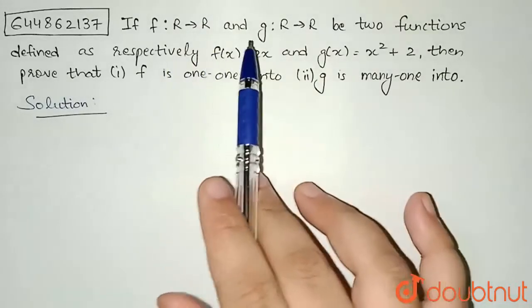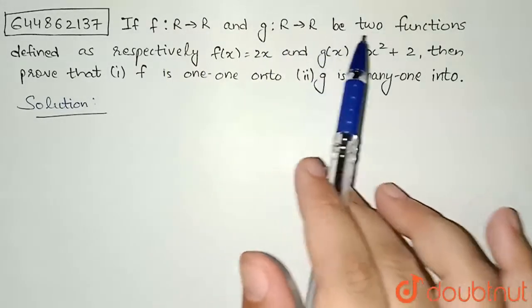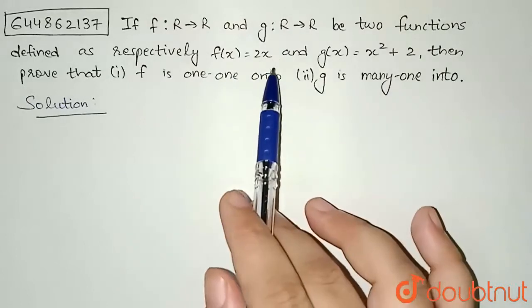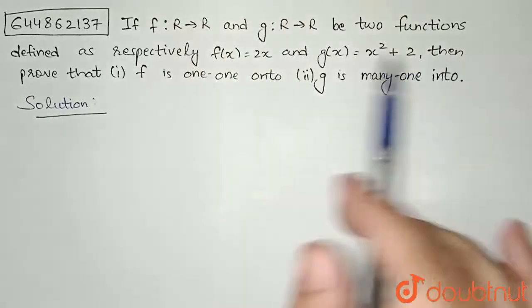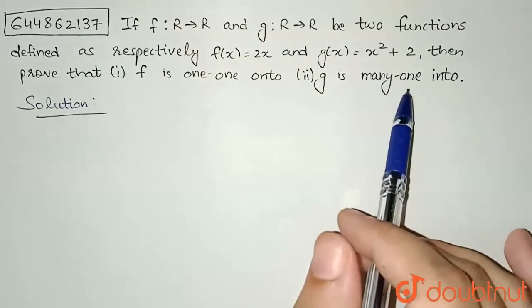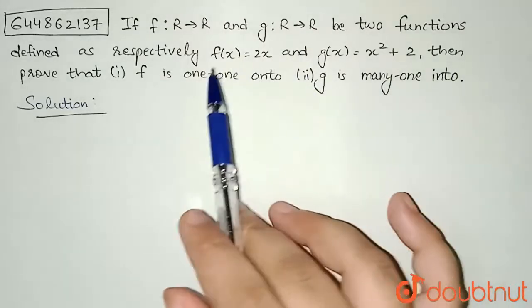function f from R to R and function g from R to R be two functions defined as respectively f(x) = 2x and g(x) = x² + 2, then prove that f is one-one onto and g is many-one into. So we are given two functions f and g and we need to prove that f is one-one onto and g is many-one into.